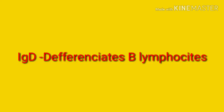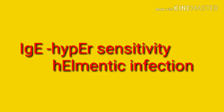For immunoglobulin D, remember 'D for differentiate.' IgD differentiates B lymphocytes — its function is to signal B cells to be activated. For IgE, remember 'hypersensitivity' and 'allergy.' The word 'hypErsEnsitivity' contains an E, making it easy to remember that IgE mediates type 1 hypersensitivity reaction.